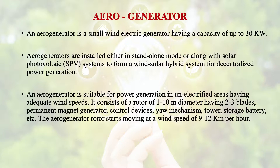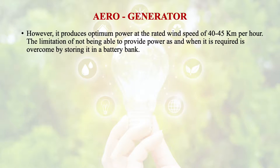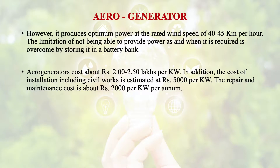The rotor of these aerogenerators starts moving at a wind speed of 9 to 12 km per hour. However, it produces optimum power at the rated wind speed of 40 to 45 km per hour. The limitation of not being able to provide power as and when required is overcome by storing energy in a battery bank. The cost of aerogenerators is about Rs. 2 to 2.5 lakhs per kilowatt, with installation including civil works estimated at about Rs. 5,000 per kW, and repair and maintenance cost of about Rs. 2,000 per kilowatt per year.